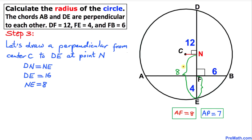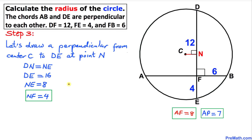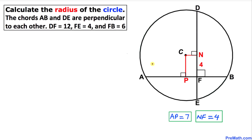We know NE is 8 units and FE is 4, so NF is the difference: 8 minus 4 equals 4 units. Therefore NF equals 4.